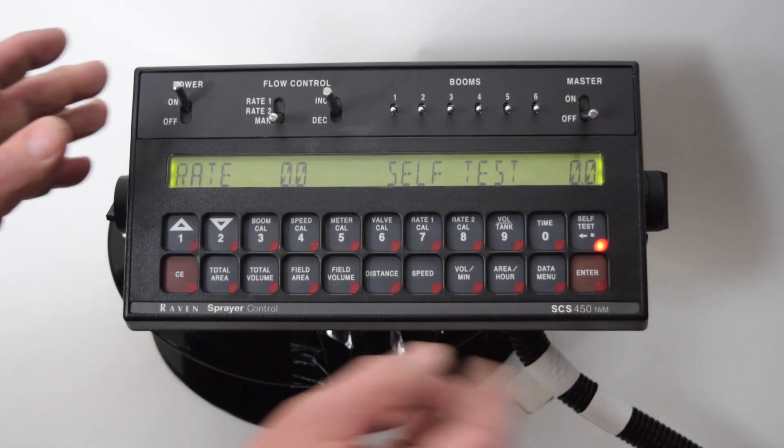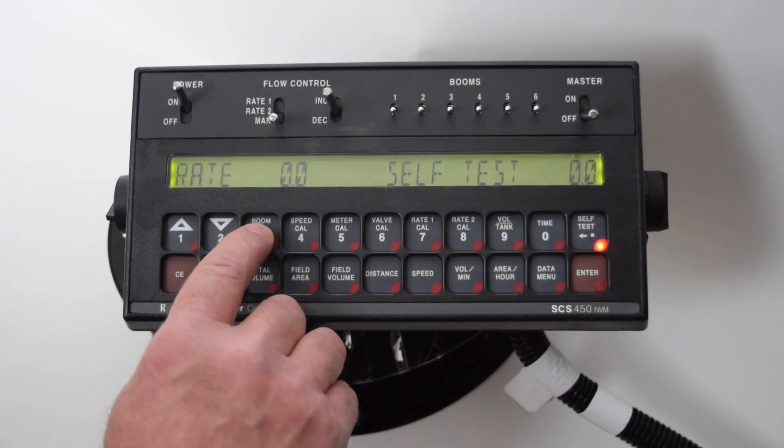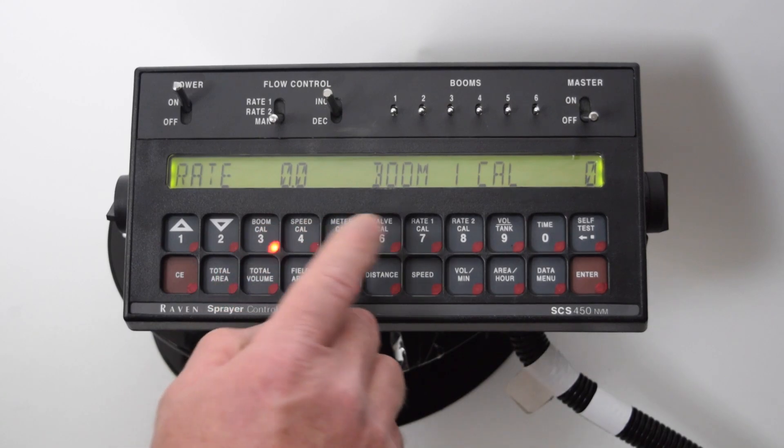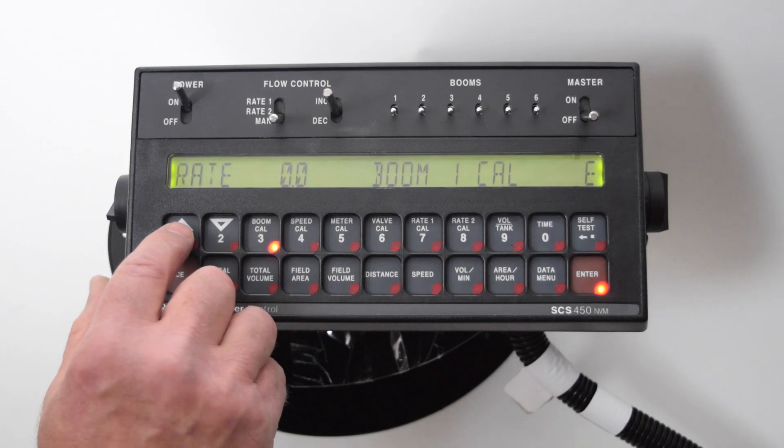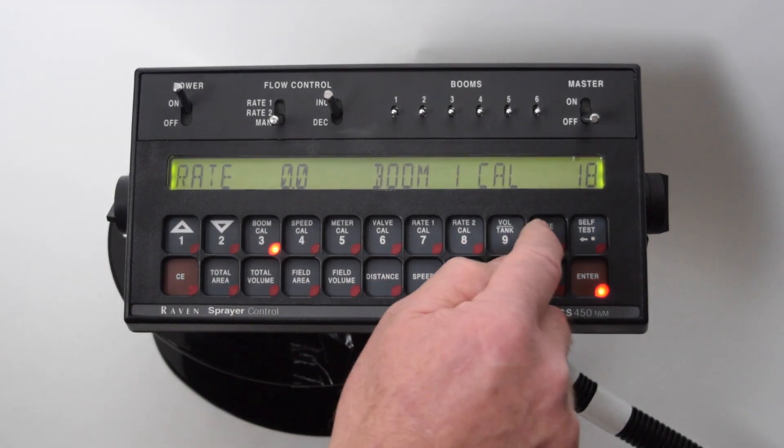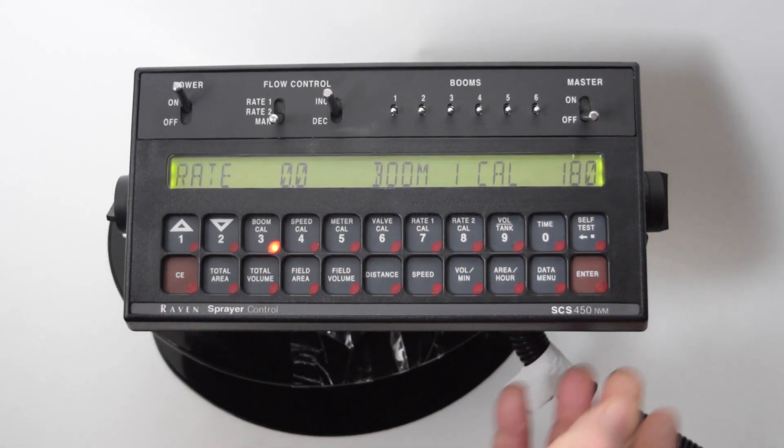So the first thing you'll do, go to button number three and that'll be your first boom which we usually have at 180 inches. So you punch in 180, hit enter.